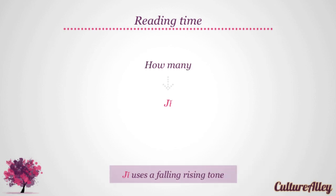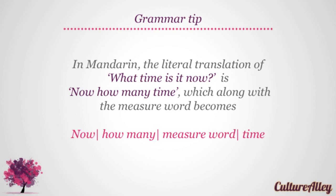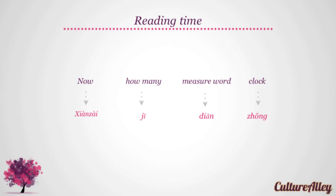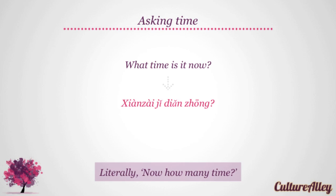As we already know, how many translates to ji and uses a falling-rising tone. In Mandarin, the literal translation of 'what time is it now' becomes 'now how many time', which along with the measure word becomes 'now how many measure word time'. The word-by-word break-up is: now = xiàn zài, how many = ji, measure word = dien, clock = zhōng. Thus, 'what time is it now' translates to xiàn zài ji dien zhōng, literally meaning 'now how many time'.